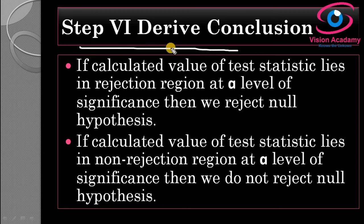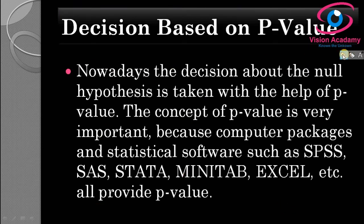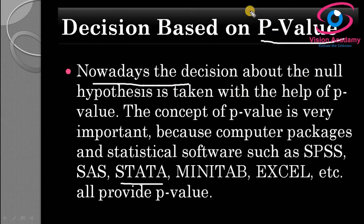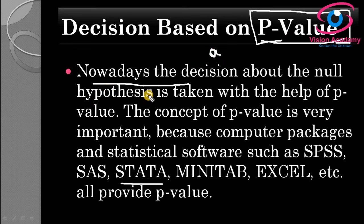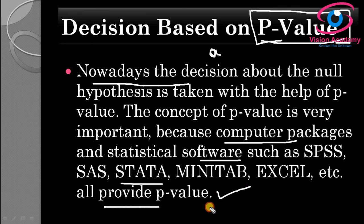These are the steps we follow to test a hypothesis. Nowadays, statistical software such as SPSS, SAS, Stata, Minitab, and Excel are widely used. In these software packages, decisions about the null hypothesis are taken based on the p-value. The p-value has significant prominence in statistical software — you compare the p-value with the significance level alpha to arrive at a decision in hypothesis testing.